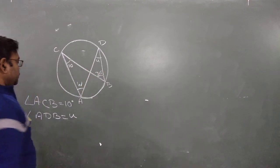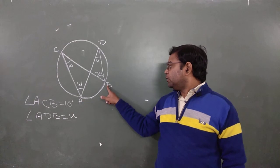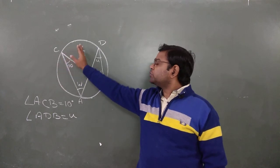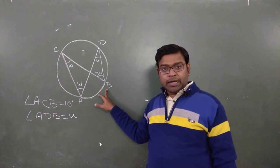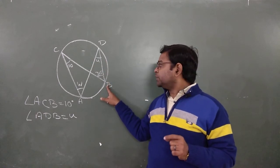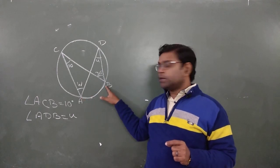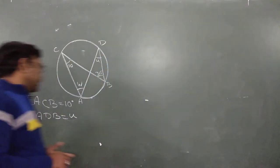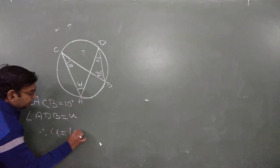As we know from the theorem, the angle made by the same arc of a circle to the same segment on any point of the circumference is equal. Angle ACB and angle ADB are both angles on the circumference with common arc AB. Therefore by this theorem, these two angles must be equal to each other. So the value of U equals 10 degrees.